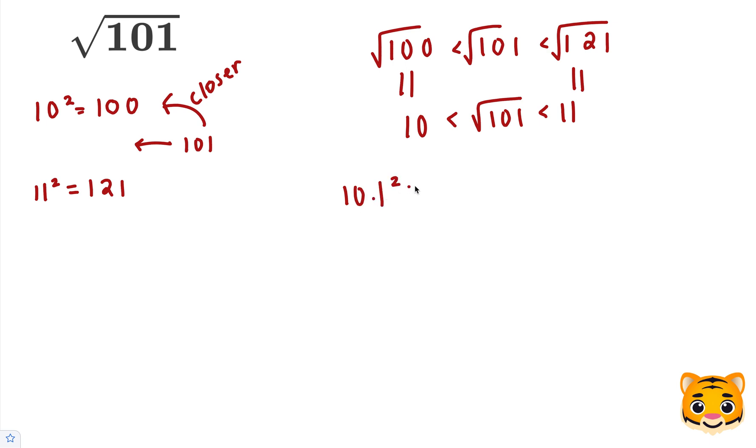Let's try 10.1 squared, which is 10.1 times 10.1. 1 times 1 is 1, 0 times 1 is 0, and 1 times 1 is 1. Add our 0. The whole next row will be 0's because we're multiplying by 0.